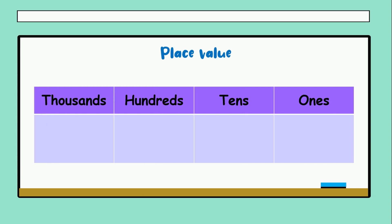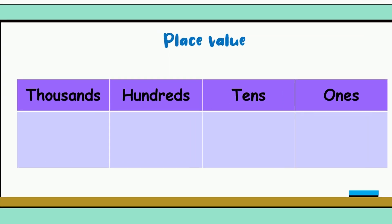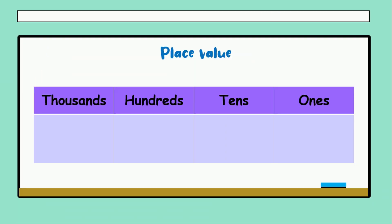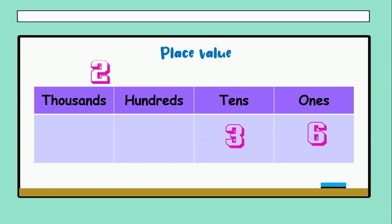Now we have a big number. In this example, we have four columns: ones, tens, hundreds, and thousands. We have to locate this. We have six ones, three tens, two hundreds, and one thousand. The name of this number is one thousand two hundred thirty-six. Very good.